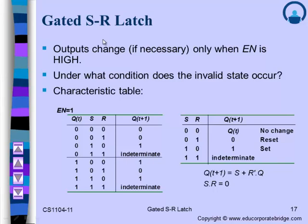Now, under what conditions does the invalid state occur? For the SR NOR latch (active high), the invalid state is when both inputs are 1. For the SR NAND latch, the invalid state is when both inputs are 0. Similarly, for the gated SR latch with EN=1 (enable pin already high), the circuit starts operation as expected. When S=0 and R=0, we get the memory hold state — no change; the output retains the previous value.